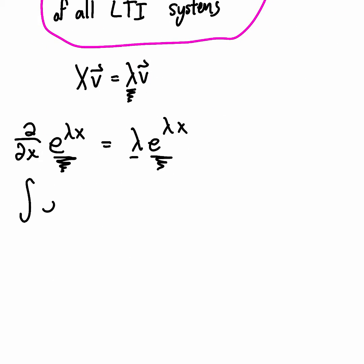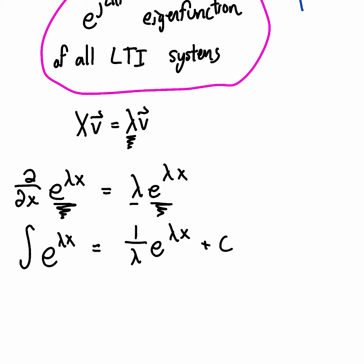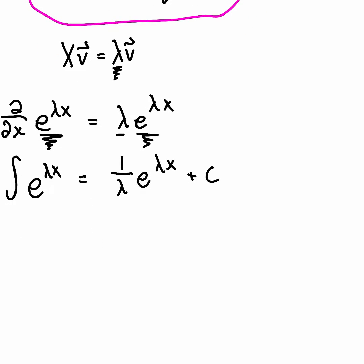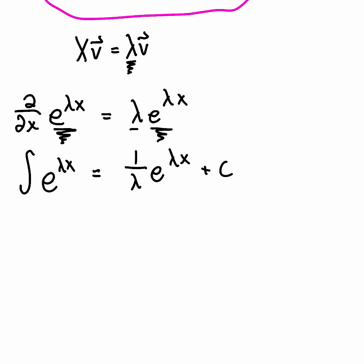Likewise, the integral of e^(λx) equals (1/λ)·e^(λx). Once again, taking the integral just scales the original function — this time by the reciprocal. When we think about what's happening on the unit circle, the scaling factor is the j2πf term, which involves phase shifts. The key point is that if we want to take the derivative or integral of a complex exponential, it's simply this coefficient — this eigenvalue — times that signal, so we don't have to do anything complicated to get there.